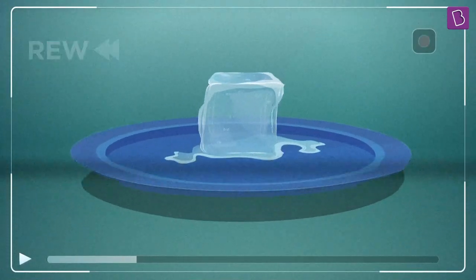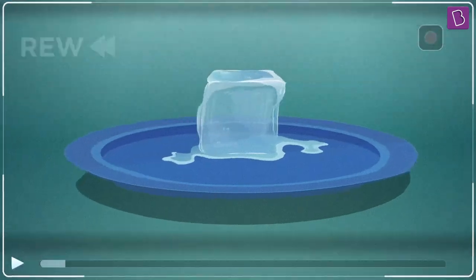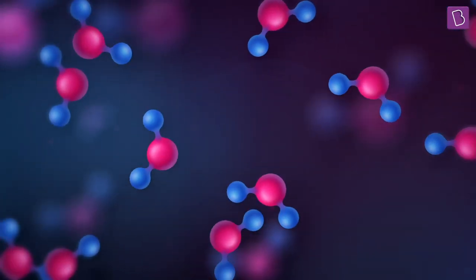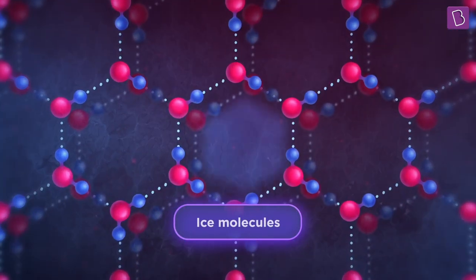Meanwhile, the molecules of ice are locked in a specific hexagonal arrangement. So to freeze, these water molecules should arrange themselves to form this beautiful cage-like pattern.